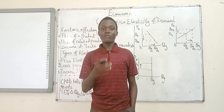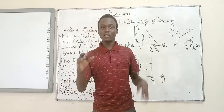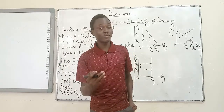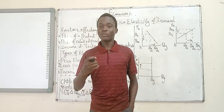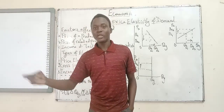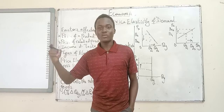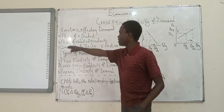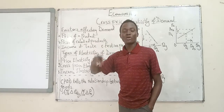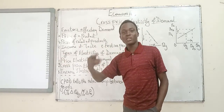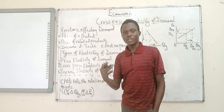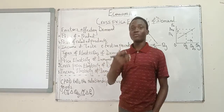Then you have cross price elasticity, because we are talking about two goods. Cross price elasticity is telling you the degree of responsiveness of the quantity demanded of a product to the price of another product. If the price of another product rises, will the quantity demanded of this particular product rise or fall? That is what cross price elasticity of demand is telling you.